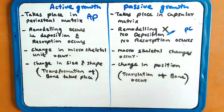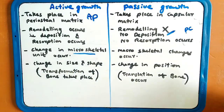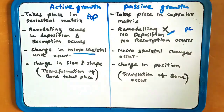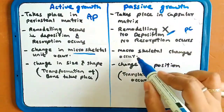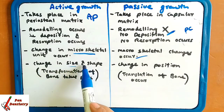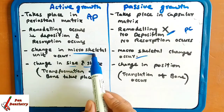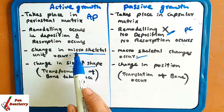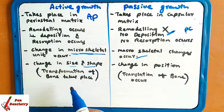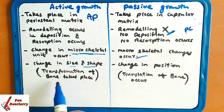In active growth, macroskeletal units and microskeletal units occur. Macroskeletal is the change in size and shape — that is, the skeletal part is changing at the macro level. Size and shape is changing, meaning transformation of the bone takes place.